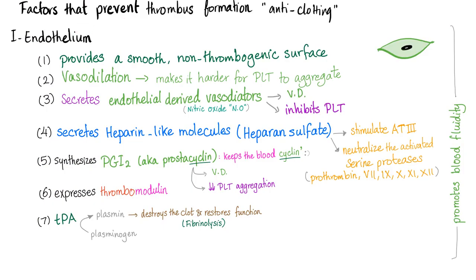As you know, you have pro-coagulation factors and anti-coagulation mechanisms. The anti-clotting or anti-coagulation factors include the great smooth endothelium. It provides a smooth, non-thrombogenic surface. It helps in vasodilation — when the vessel is larger, it makes it harder for platelets to aggregate because there is more surface area. It secretes endothelial-derived vasodilators, such as nitric oxide, which causes vasodilation and inhibits platelet aggregation.